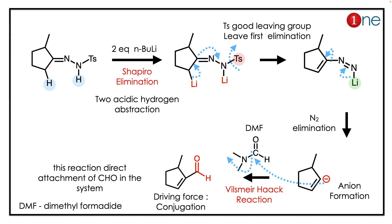The answer lies in the Sommelet-Hauser elimination. Basically, it involves elimination of the amine to form an alkene. In the first step of the reaction, you are abstracting the proton to form a stable anion through butyllithium. Nitrogen is a good leaving group, so you draw the reaction mechanism toward nitrogen.